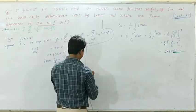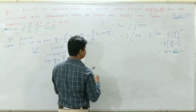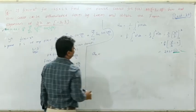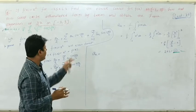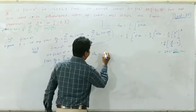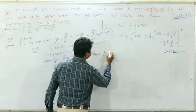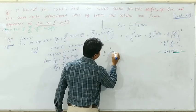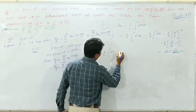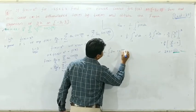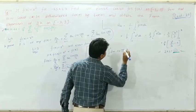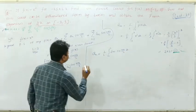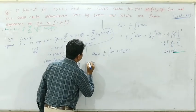Now we find aₙ. In general, aₙ = (1/l)·∫₋ₗˡ f(x)·cos(nπx/l)dx.